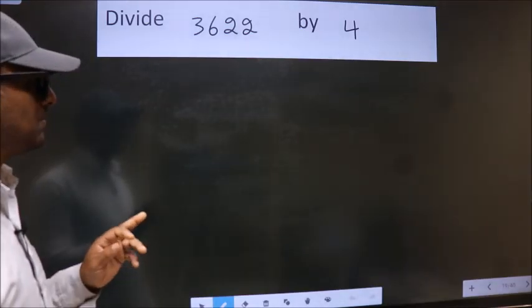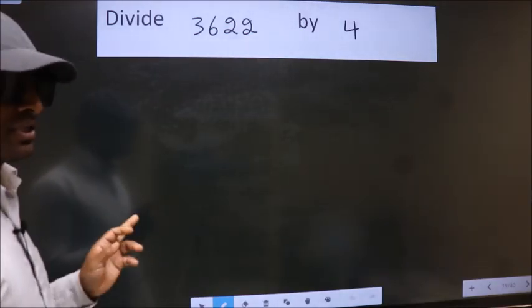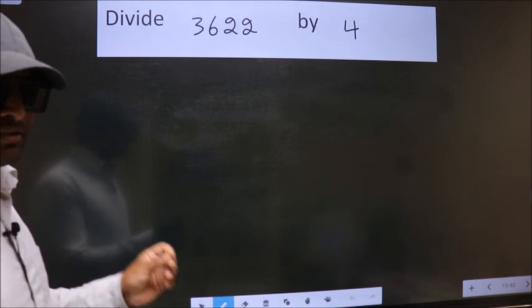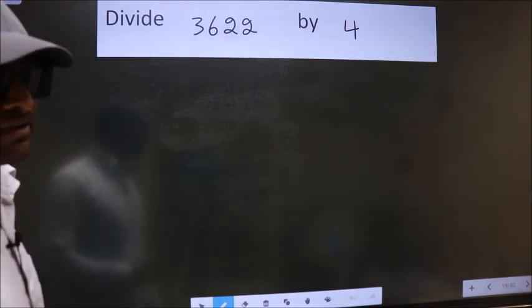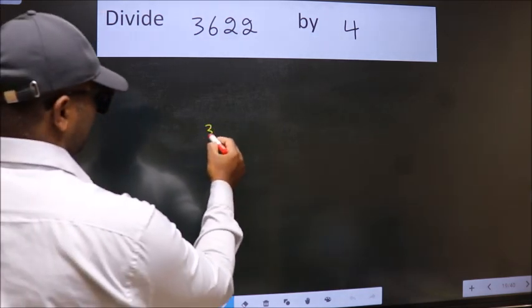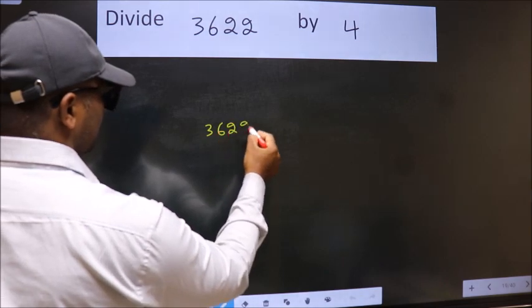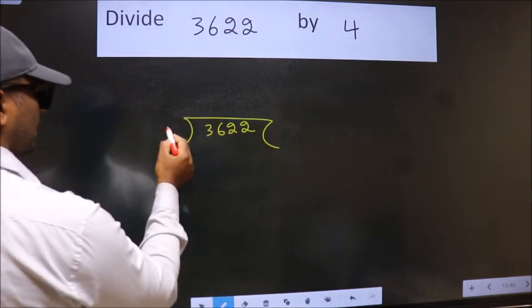Divide 3622 by 4. To do this division, we should frame it in this way: 3622 here, 4 here.